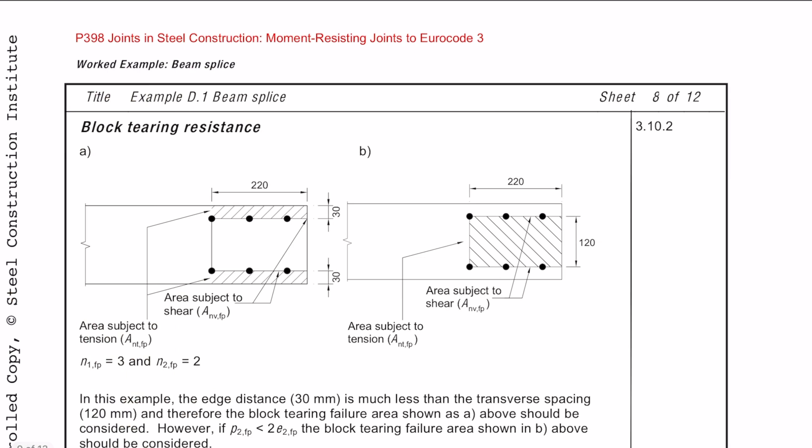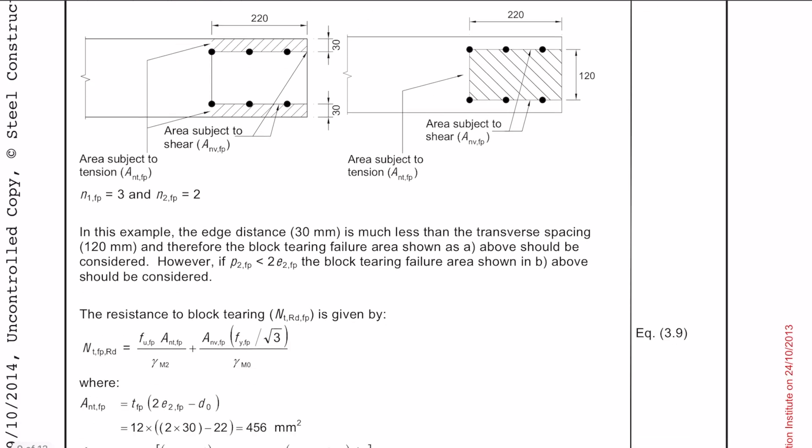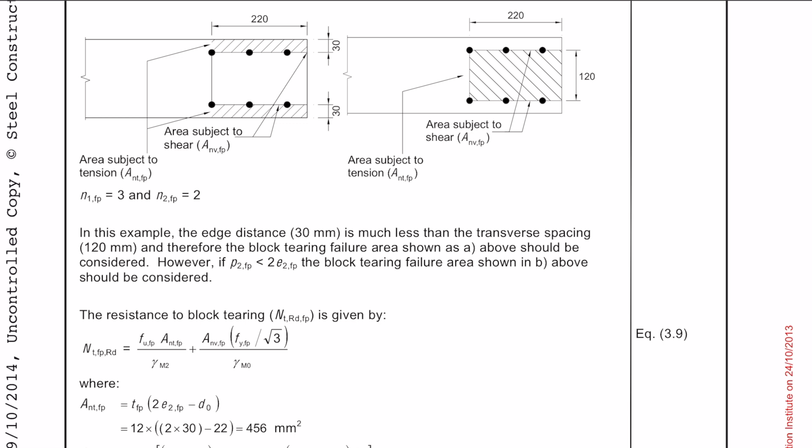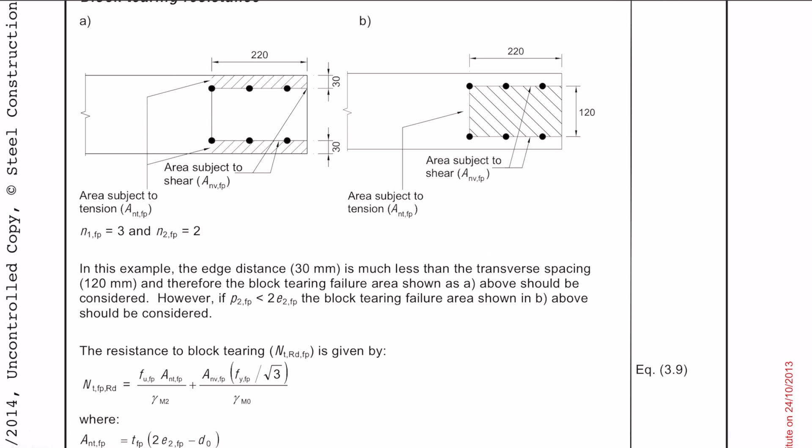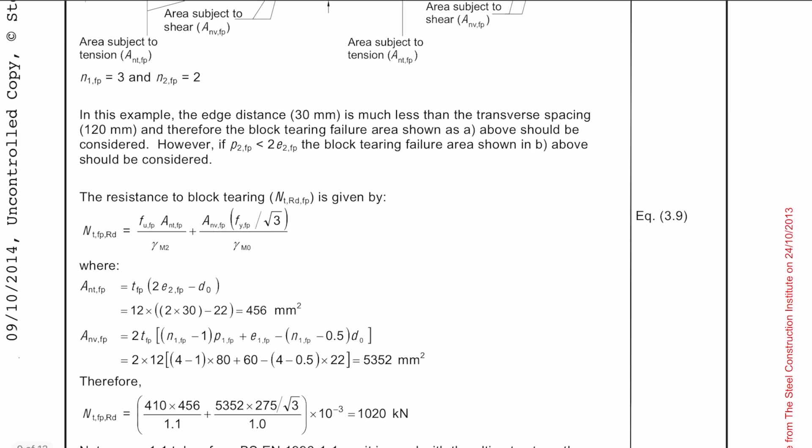So next, we need to check the block tearing resistance. There are essentially two failure modes that we need to check, and this is shown in the diagram here. So to determine which failure mode that we need to check, it's basically to do with the edge distance and how much less or more it is to the transverse spacing. In this example, because the edge distance of 30 mil is much less than a transverse spacing of 120 mil, we need to check the failure mode as shown in diagram A. So like before, just follow the equations, plug the numbers in, and then check that the design force is less than the resistance.